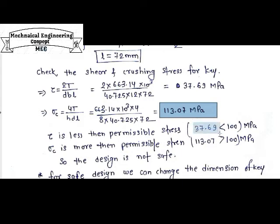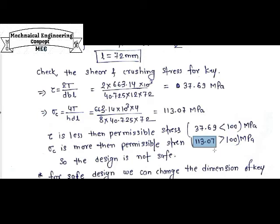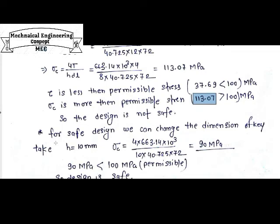Tau = 37.69 MPa is less than the permissible shear stress, so the shear stress condition is safe. However, when we compare sigma_c = 113.07 MPa with the permissible compressive stress of 100 MPa, the induced value exceeds the permissible value. So on the basis of compressive stress, the key design is not safe enough, and we need to revise the dimensions.